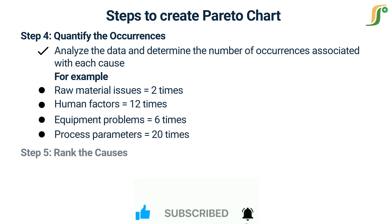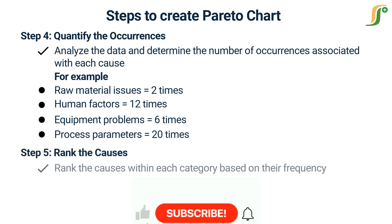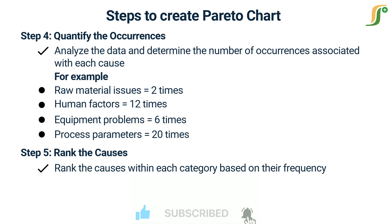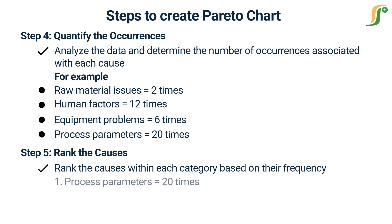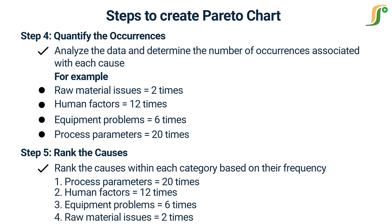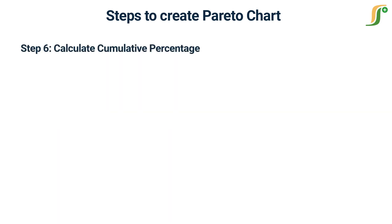Step 5 — Rank the causes: rank the categories based on their frequency or occurrence. For example, within the process parameter category, mixing time, compression force, and tablet press speed might be the causes. In this example, process parameters rank first with a frequency of 20, and human error ranks second with a frequency of 12. Rank all four categories as per their frequencies.